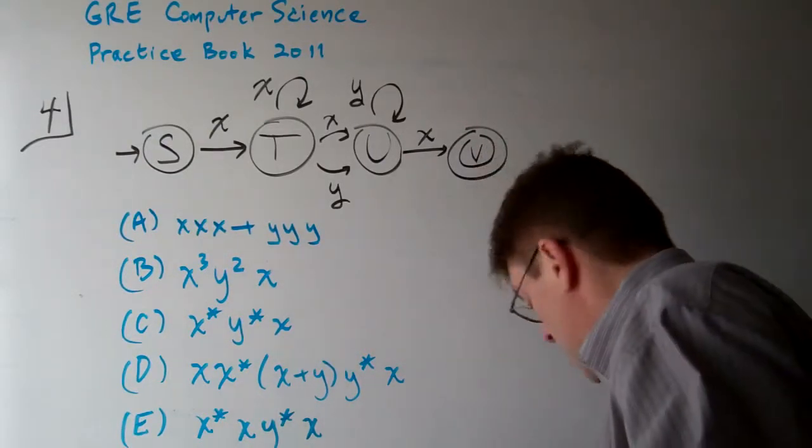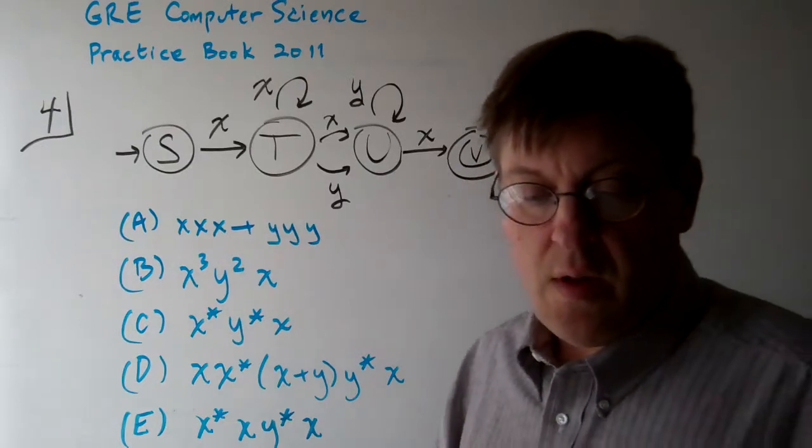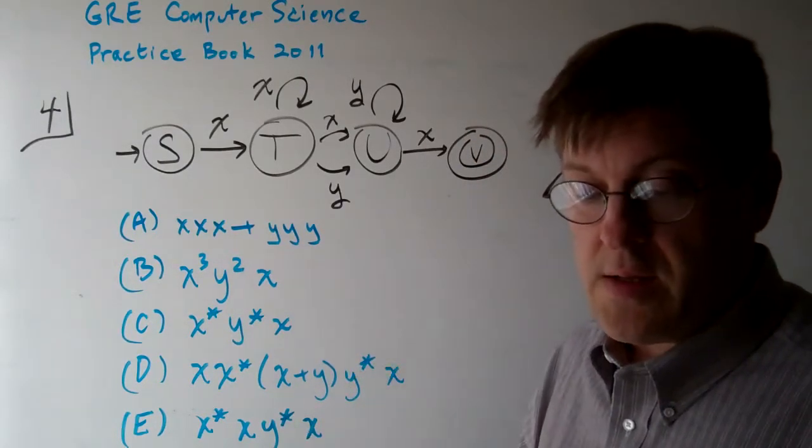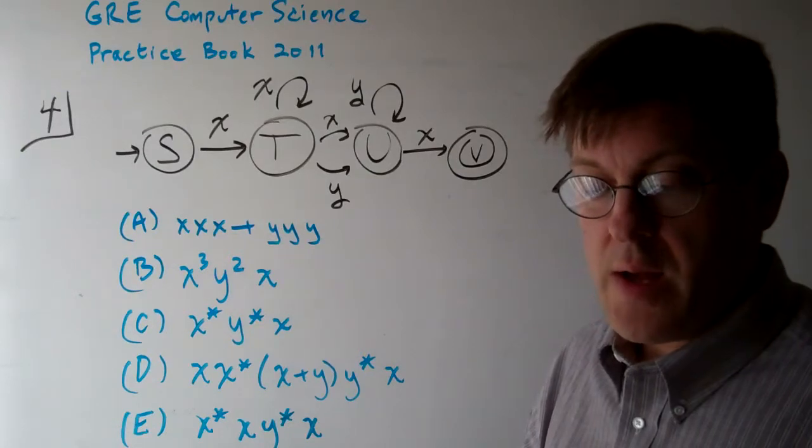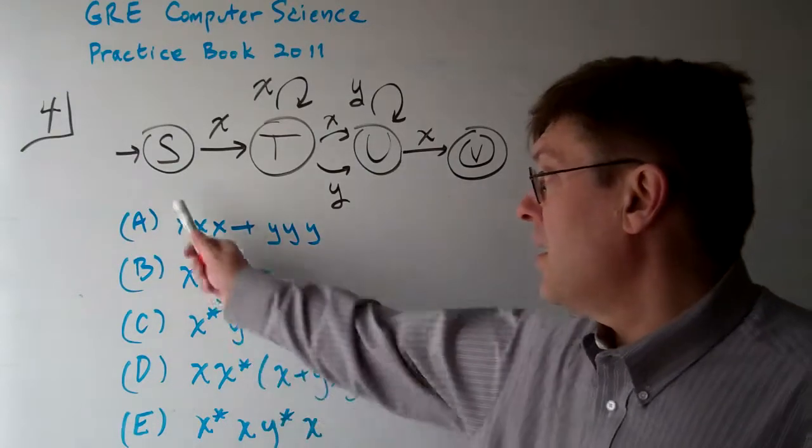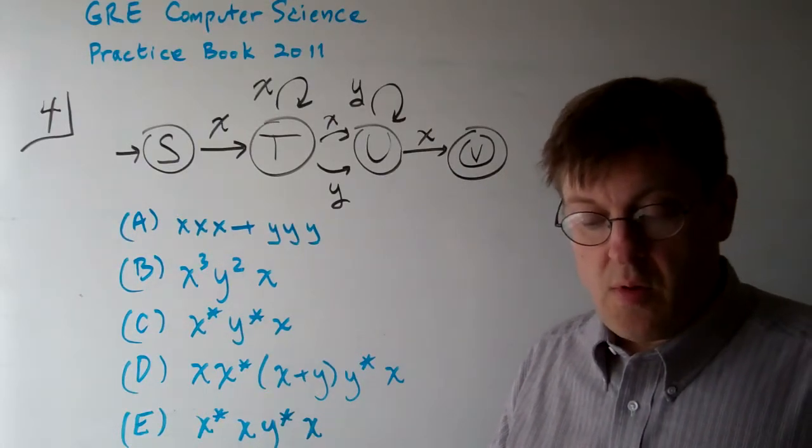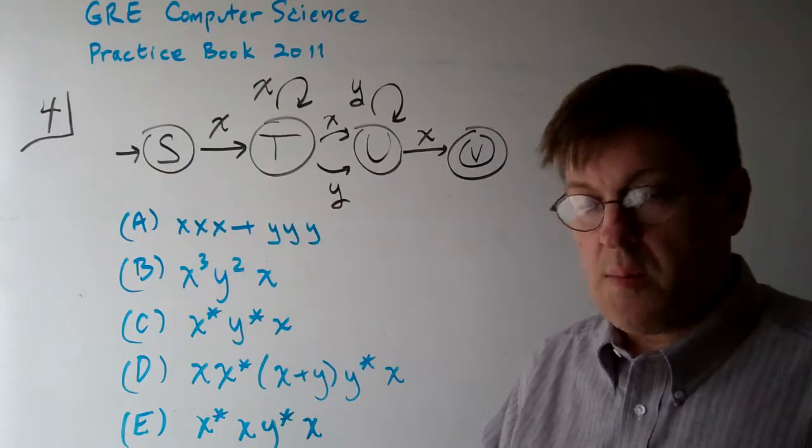Question 4. Consider the following non-deterministic finite state automaton over alphabet XY with start state S. Which of the following is the regular expression corresponding to the automaton above?